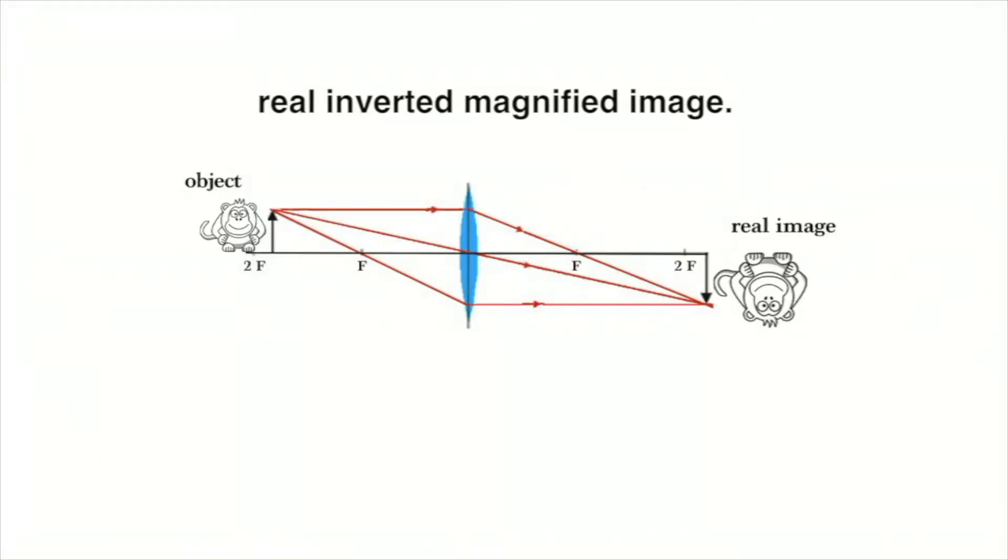A real image is formed when the object is beyond the focal point. When the object is near the lens, the real image is also magnified. But unlike the virtual image, it is inverted, or upside down, and right-left reversed.